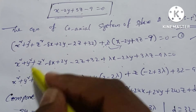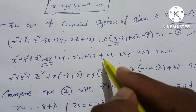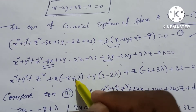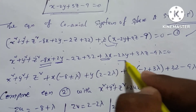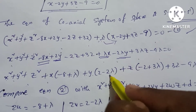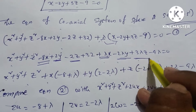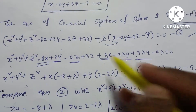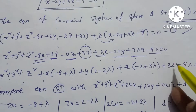Expanding and grouping terms: x² plus y² plus z² plus (minus 8 plus lambda)x plus (2 minus 2·lambda)y plus (minus 2 plus 3·lambda)z plus (32 minus 9·lambda) equal to 0.